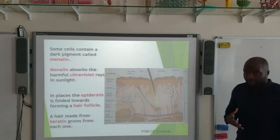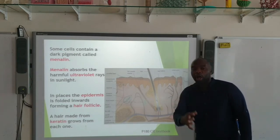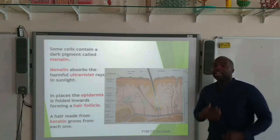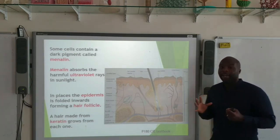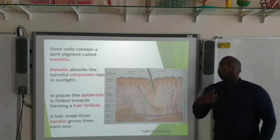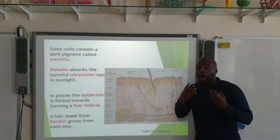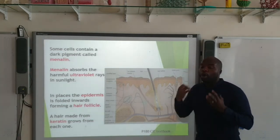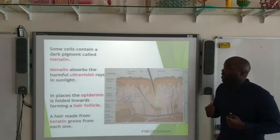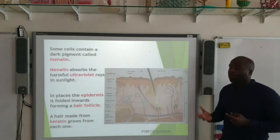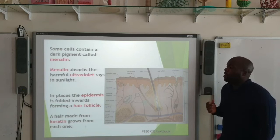We also have some cells which contain a dark pigment. This pigment is known as melanin. Melanin absorbs all of the harmful ultraviolet rays coming from the sun. This is really important to protect the cells.